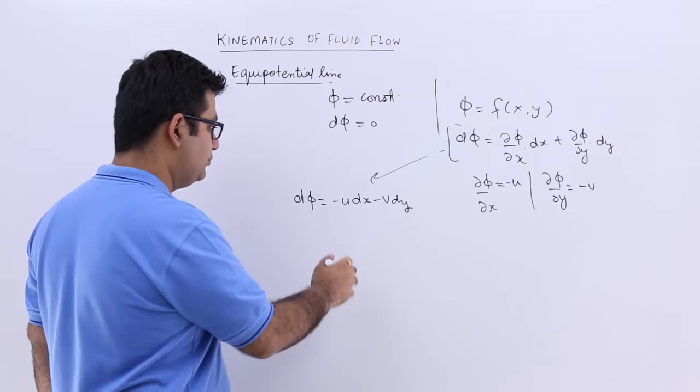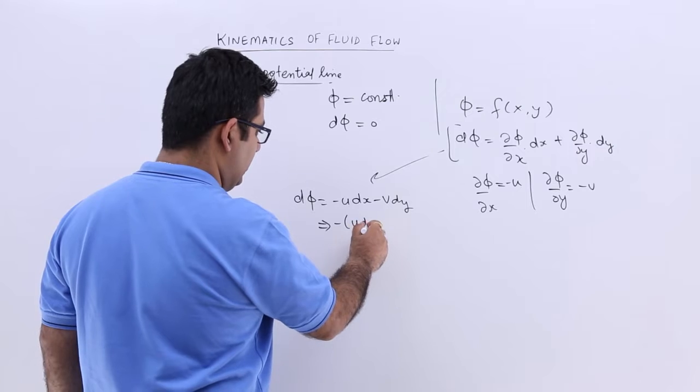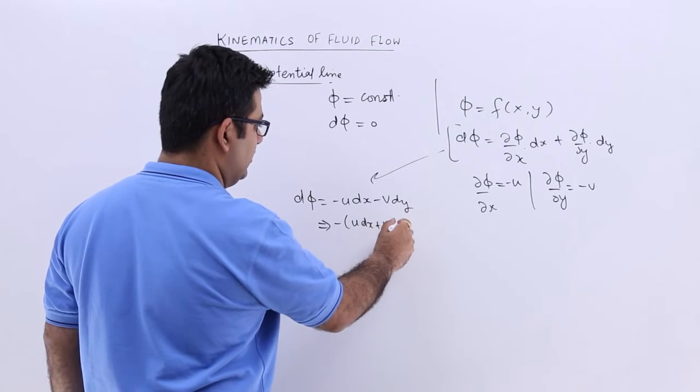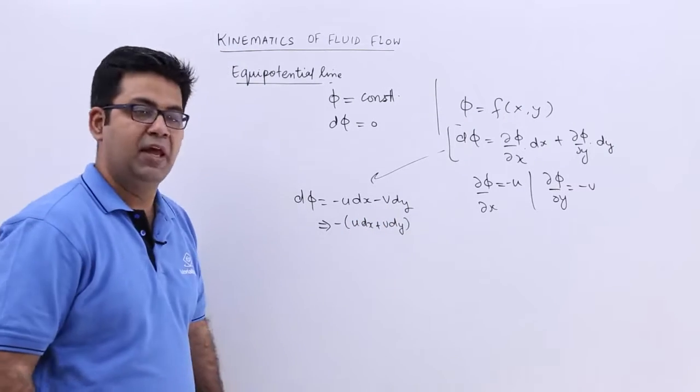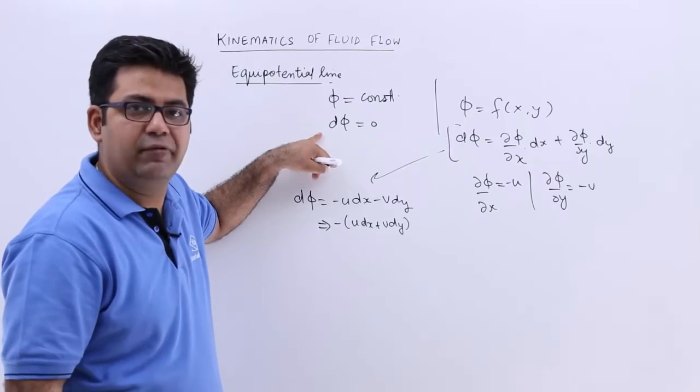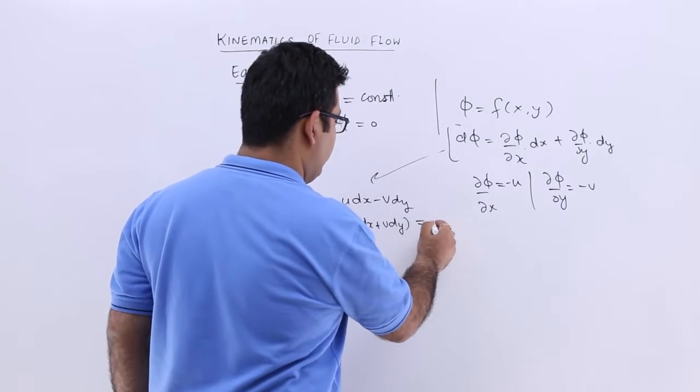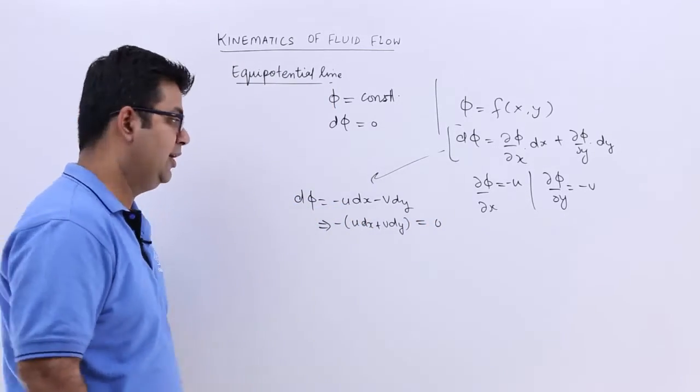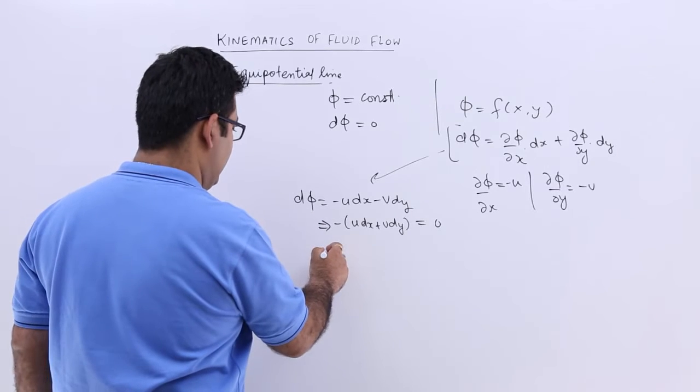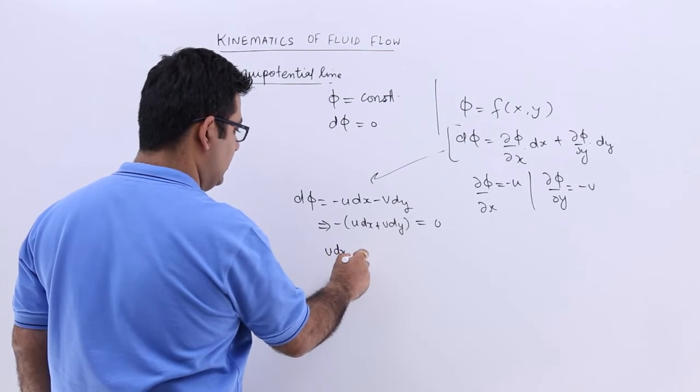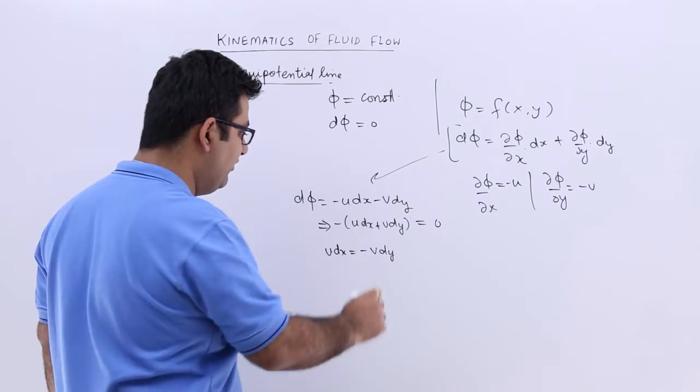And this would give you minus u dx plus v dy. Now, we need to have d phi equal to 0. So, d phi would be put equal to 0, and from here, I can get u dx is equal to minus v dy.